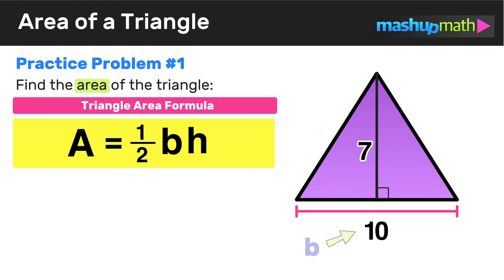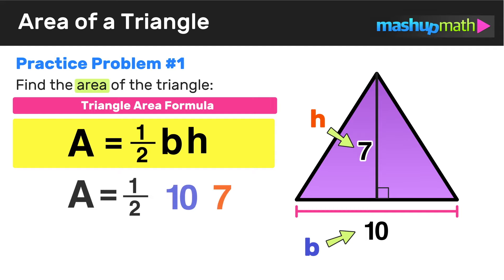We can see that the base of the given triangle is equal to 10, so B equals 10. And the height of the given triangle is 7, so H equals 7. Let's rewrite the formula replacing B with 10 and H with 7, giving us: area equals one half times 10 times 7.